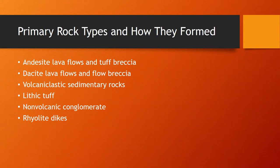The first thing we're going to talk about is the primary rock types and how they formed. In order from most to least abundant, the rocks in our geologic province are: andesite lava flows and tuff breccia, dacite lava flows and flow breccia, volcaniclastic sedimentary rocks, lithic tuff, non-volcanic conglomerate, and rhyolite dikes.